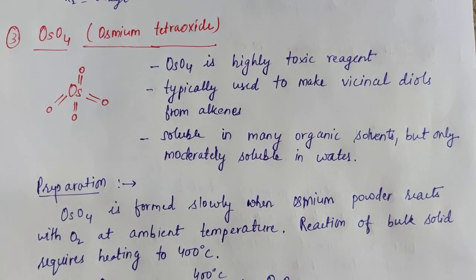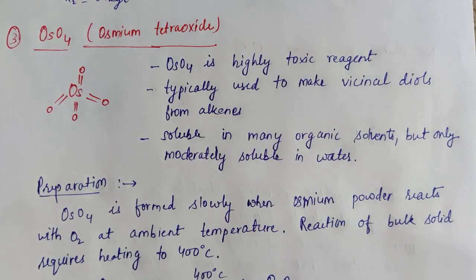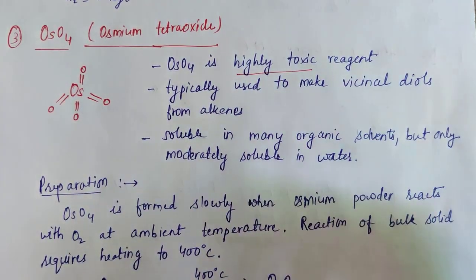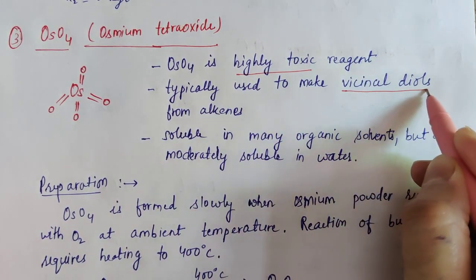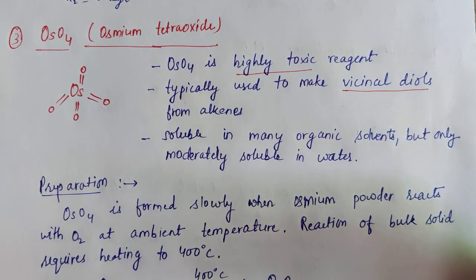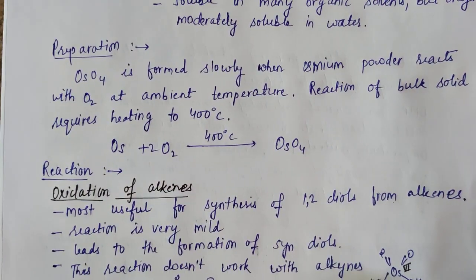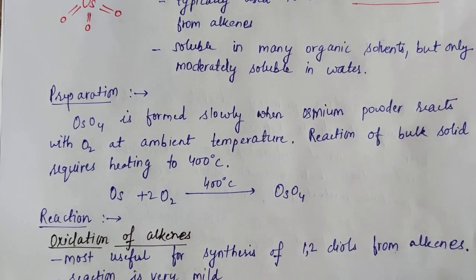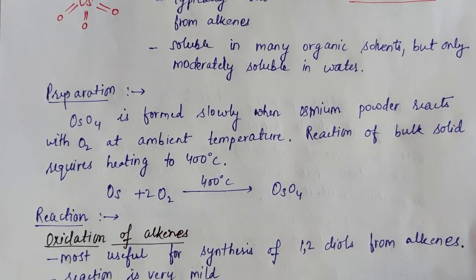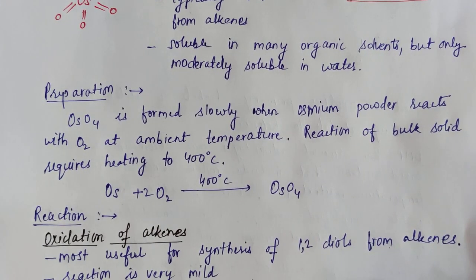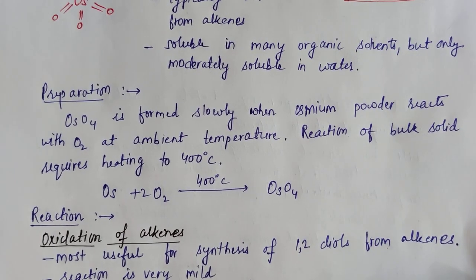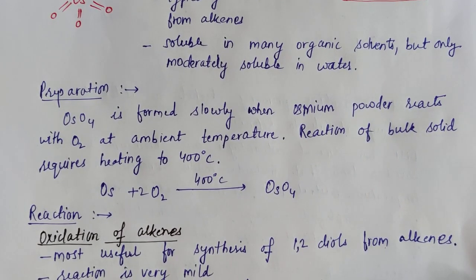The next oxidizing agent is osmium tetraoxide — osmium metal connected to four oxygen atoms by double bonds. Osmium tetraoxide is a highly toxic reagent, but it is used in synthesizing vicinal diols from alkenes. It is soluble in organic solvents but very sparingly soluble in water. For preparation, it's simply the reaction of osmium powder with oxygen at room temperature, but when synthesized commercially on a very large scale, the bulk needs to be heated to around 400 degrees Celsius.